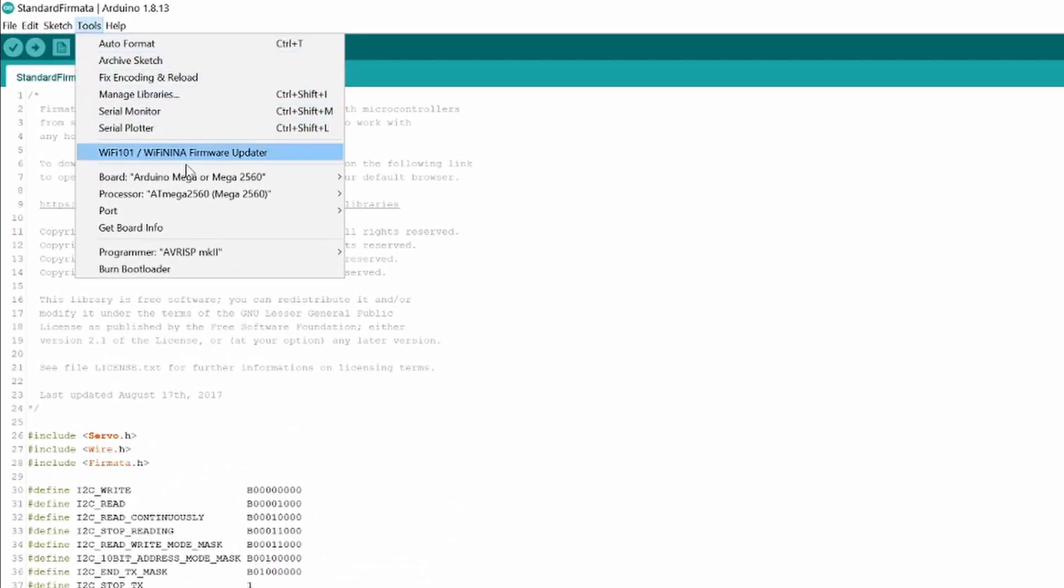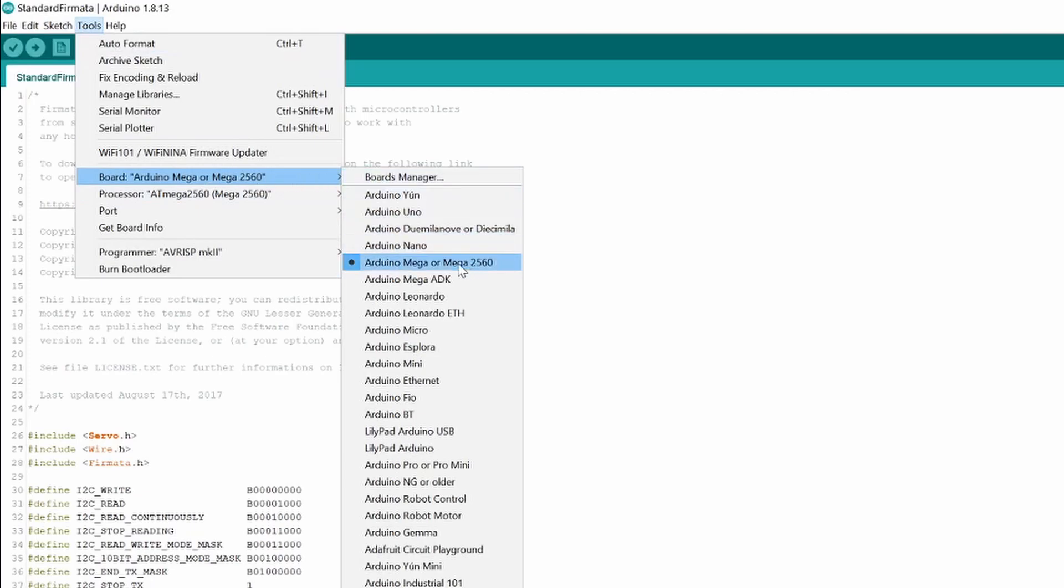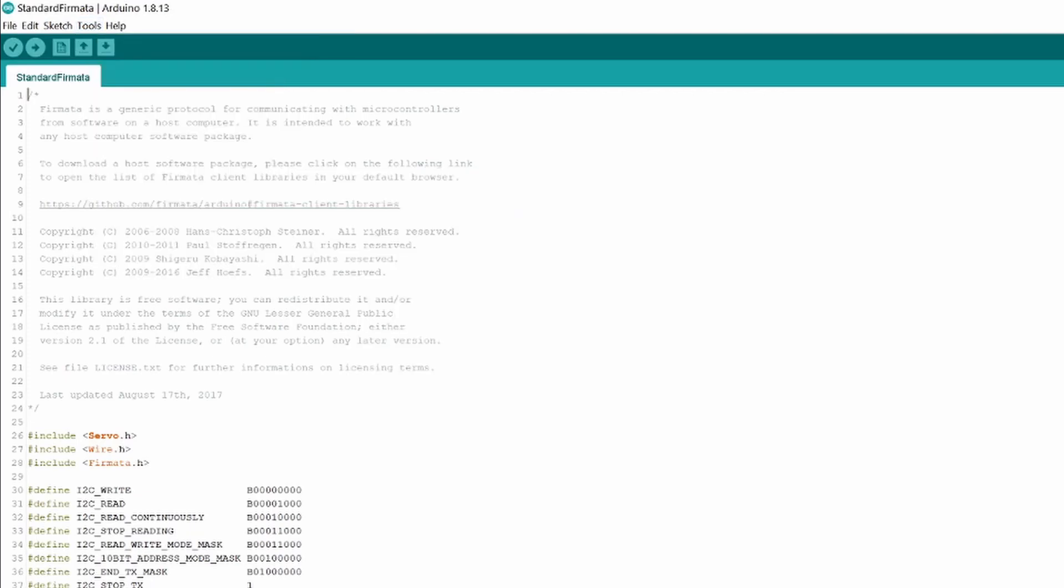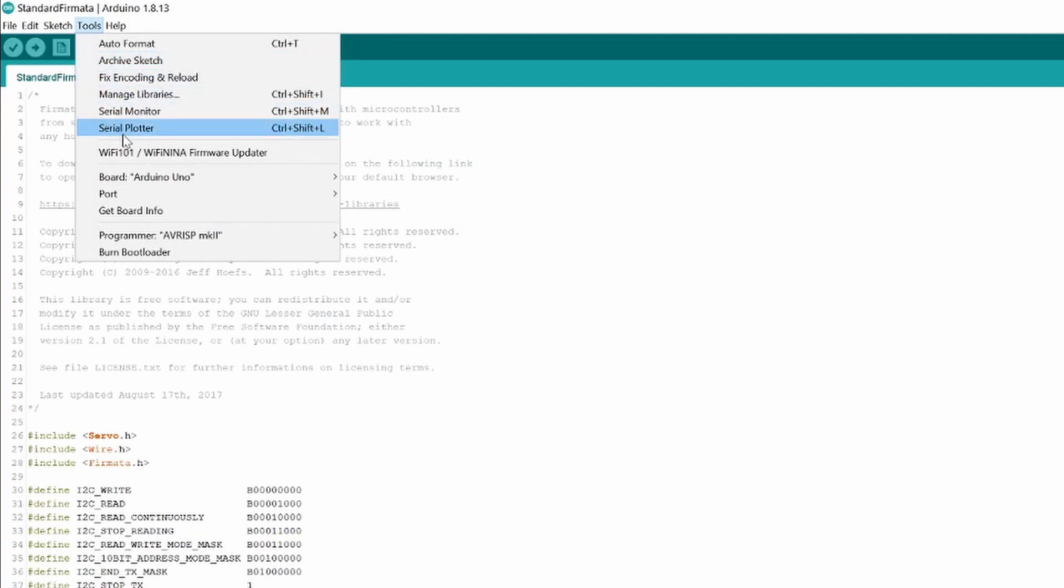Then, go to Tools and make sure the Arduino UNO board is selected. Connect your Arduino and check if the connected port is selected.